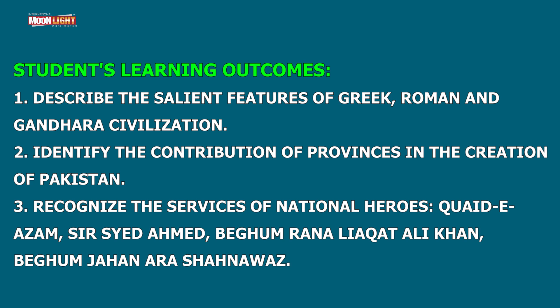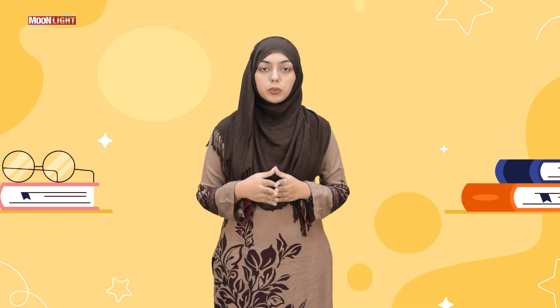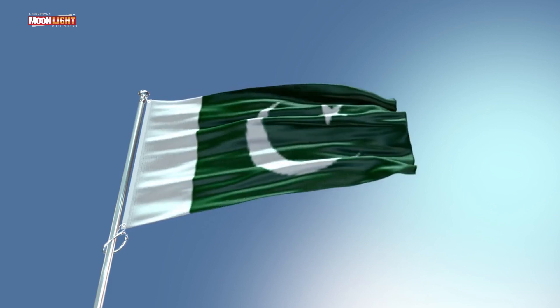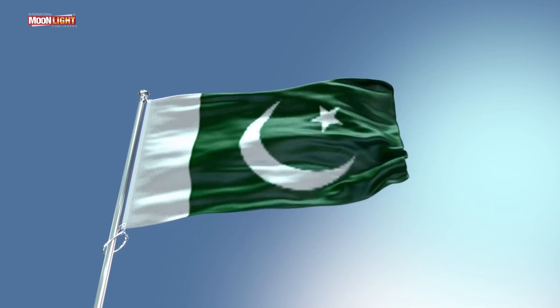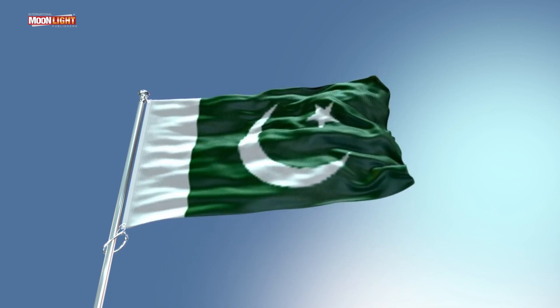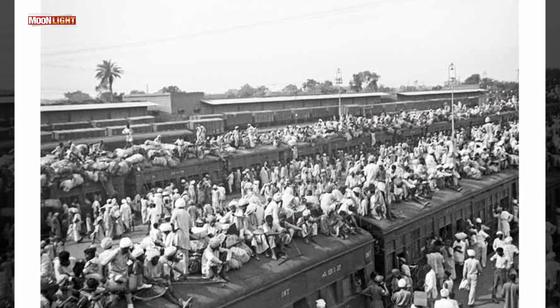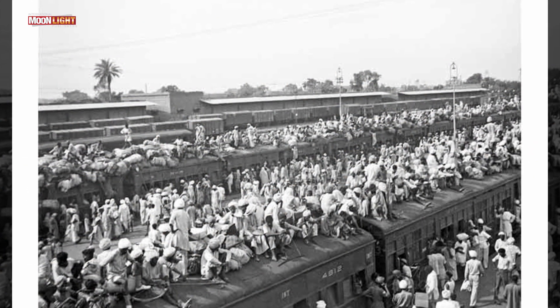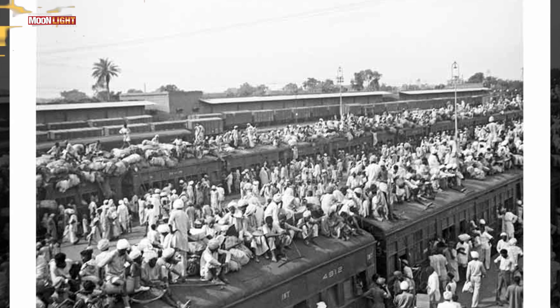قومی ہیروز میں سرسید احمد خان، بیگم رانہ لیاقت علی، اور بیگم جہاں آرا شاہ نواز شامل ہیں۔ پیارے بچوں، سب سے پہلے میں آپ کو بتاتی ہوں کہ ہسٹری کہتے کسے ہیں۔ پاکستان کس طرح وجود میں آیا؟ پاکستان بنانے کے لیے ہمیں مختلف قربانیاں دینی پڑیں — لوگوں کو جانی و مالی نقصان کا سامنا کرنا پڑا — اور بہت مشکلات کے بعد ہم نے پاکستان حاصل کیا۔ تو یہ پاکستان کی تاریخ ہے۔